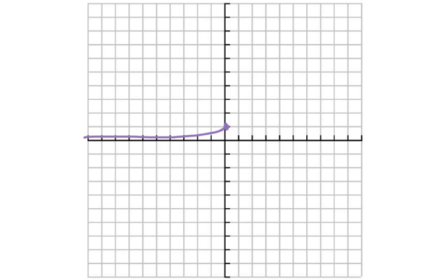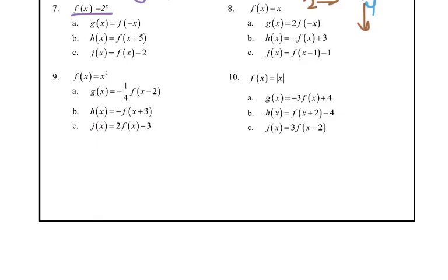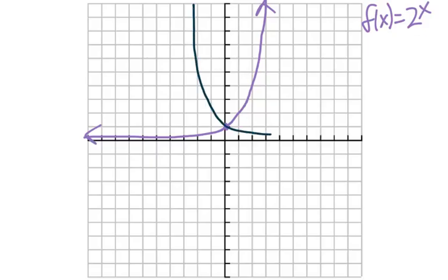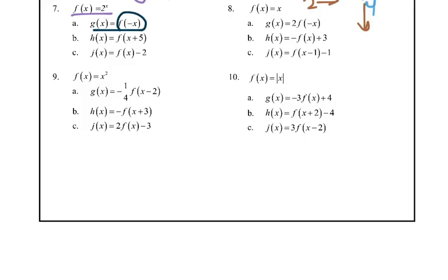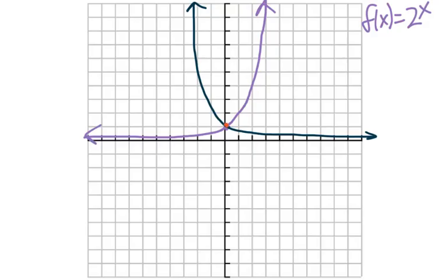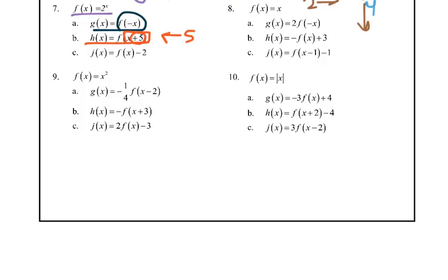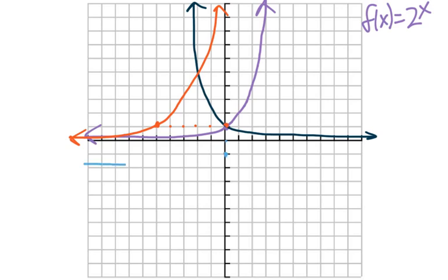Now let's look at 2 to the x. It goes through here with an asymptote of the x-axis and then curves up. For f(negative x), the negative on the inside means we just flip it over that y-axis. Then a plus 5 on the inside is to the left 5, so we just take the whole thing and shift it to the left. Then a minus 2 outside is going to take it down 2, making it parallel — and that's all we've got to do on that one.